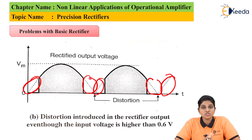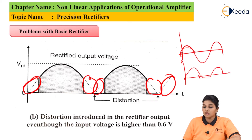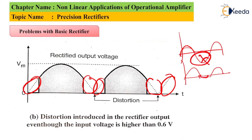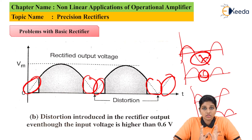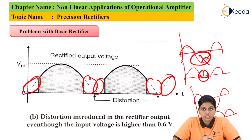Similar to a diode rectifier, the precision rectifier also has two types: half-wave precision rectifier and full-wave precision rectifier. The half-wave rectifier provides only the positive half-cycle at the output for the positive half-cycle of the input signal, while the negative cycle is eliminated. The full-wave rectifier provides output where the complete AC input signal is rectified and we get positive half-cycles at the output. The function of the rectifier remains the same — to convert AC signal into DC signal — only it is implemented using an op-amp instead of a diode, so it can also provide output below 0.6V.